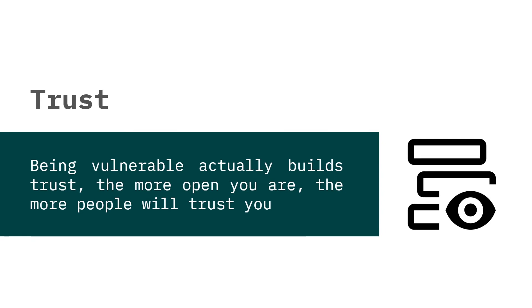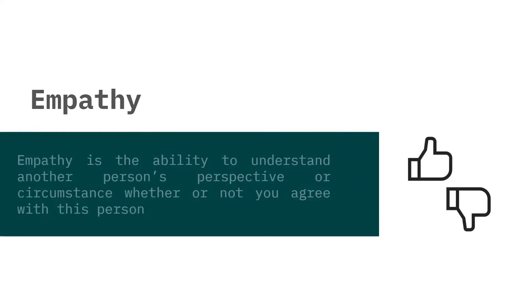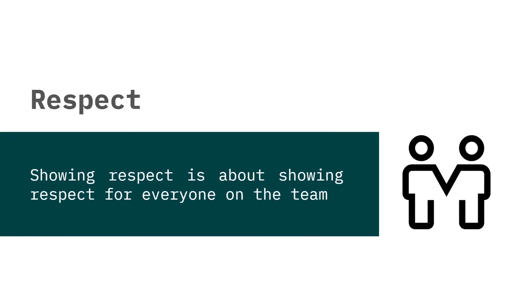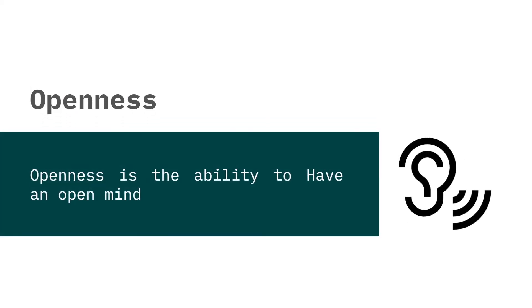Being vulnerable actually builds trust. The more open you are, the more people will trust you. Empathy is the ability to understand another person's perspective or circumstance, whether or not you agree with this person — you want to be putting yourself in the other person's shoes. Showing respect is about showing respect for everyone on the team, which allows a flow of diverse and different thinking, ideas and solutions. Openness is the ability to have an open mind and you are willing to listen to other people's ideas whilst also freely expressing your ideas without fear or intimidation.